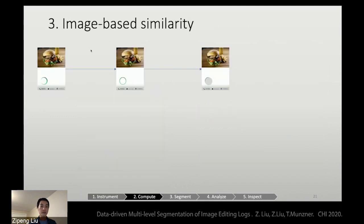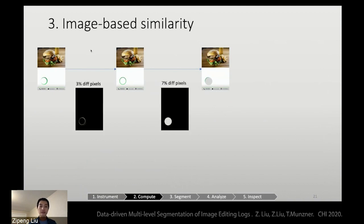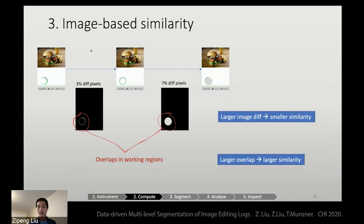Next is image-based similarities. So you have all the snapshots of each step the user did, and then you can just compute how many pixels are different between the screenshots. You can conjecture that if the image diff is larger, events have smaller similarity. You also find out overlaps in the working regions. And conjecture that if there is a larger working region overlap, events will have larger similarity.